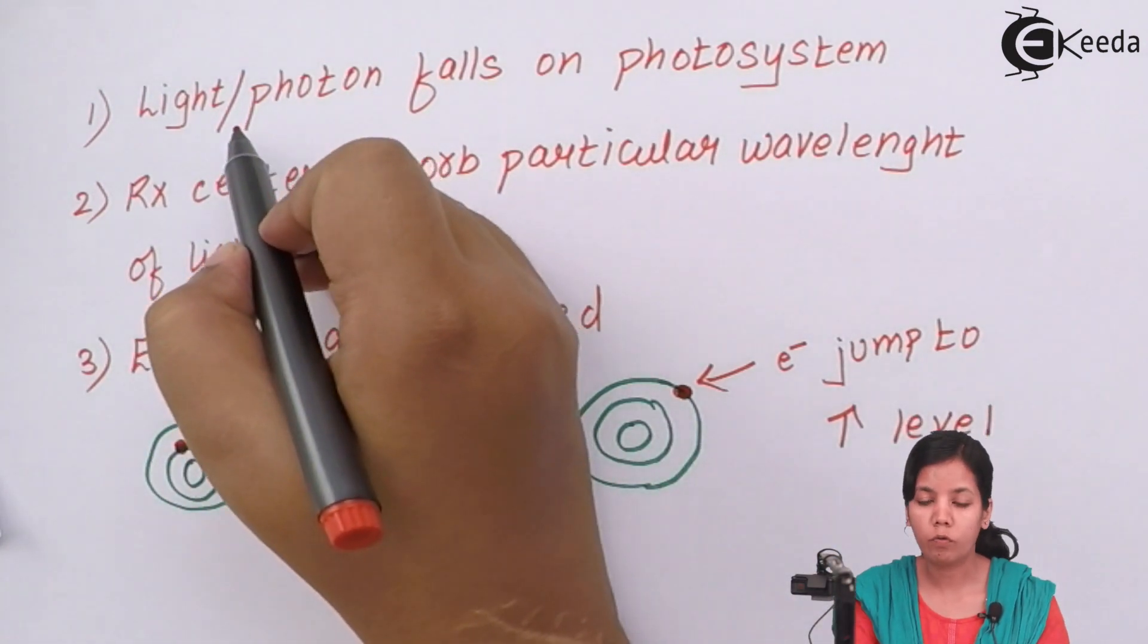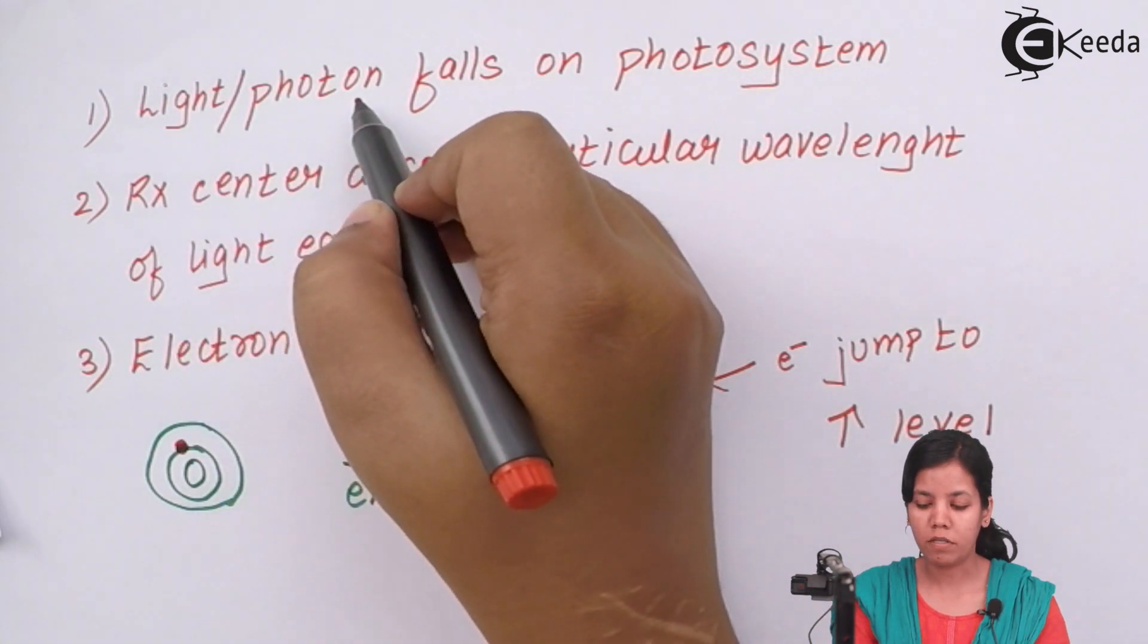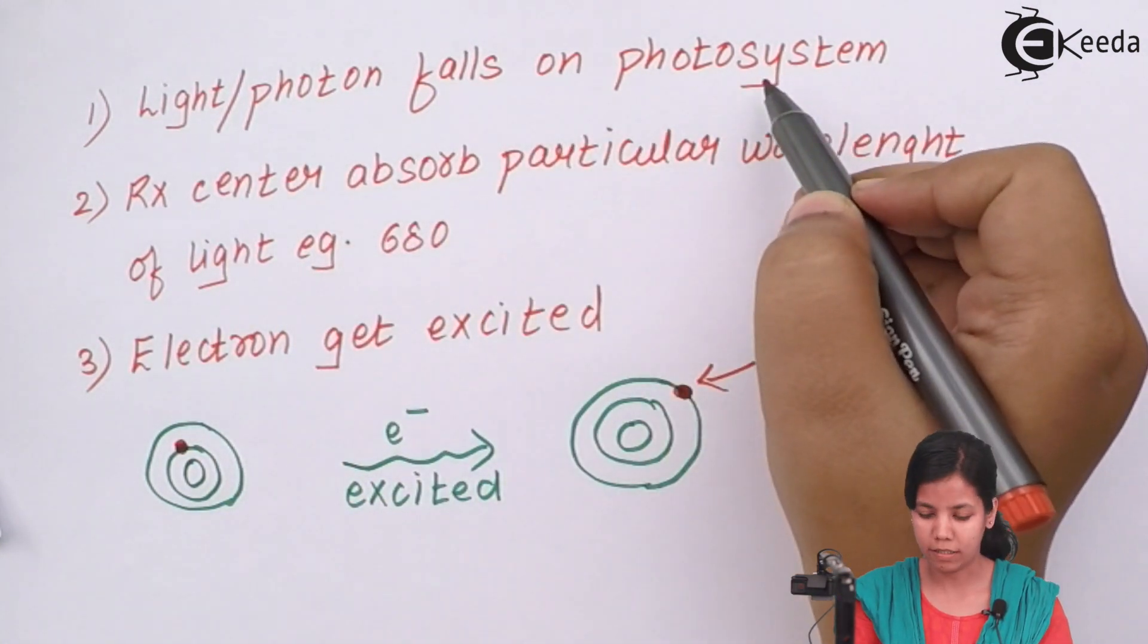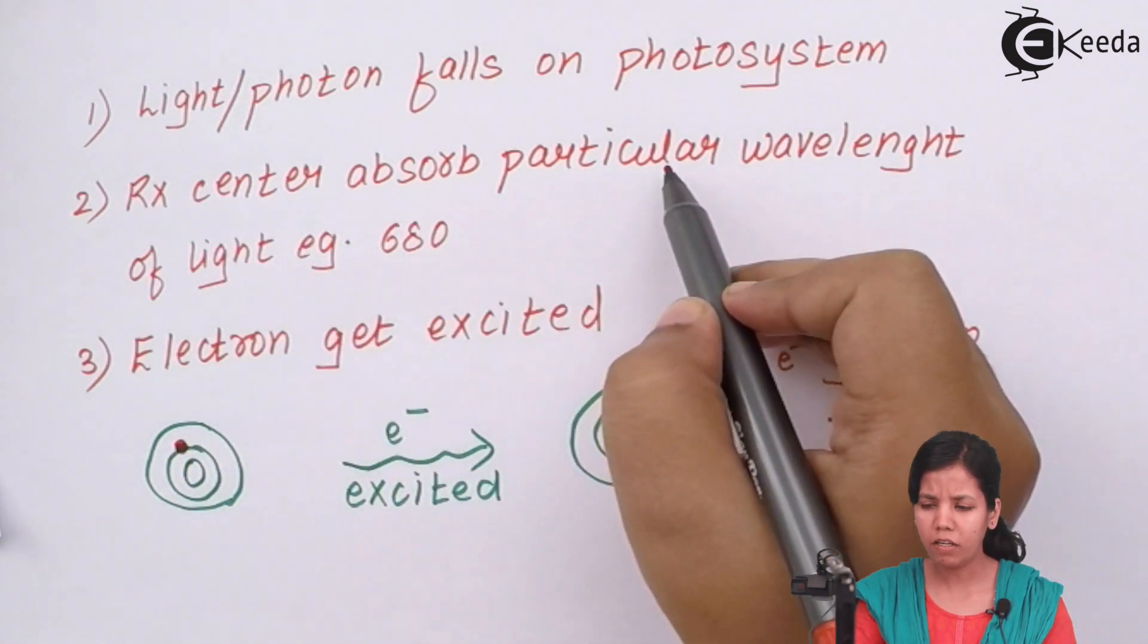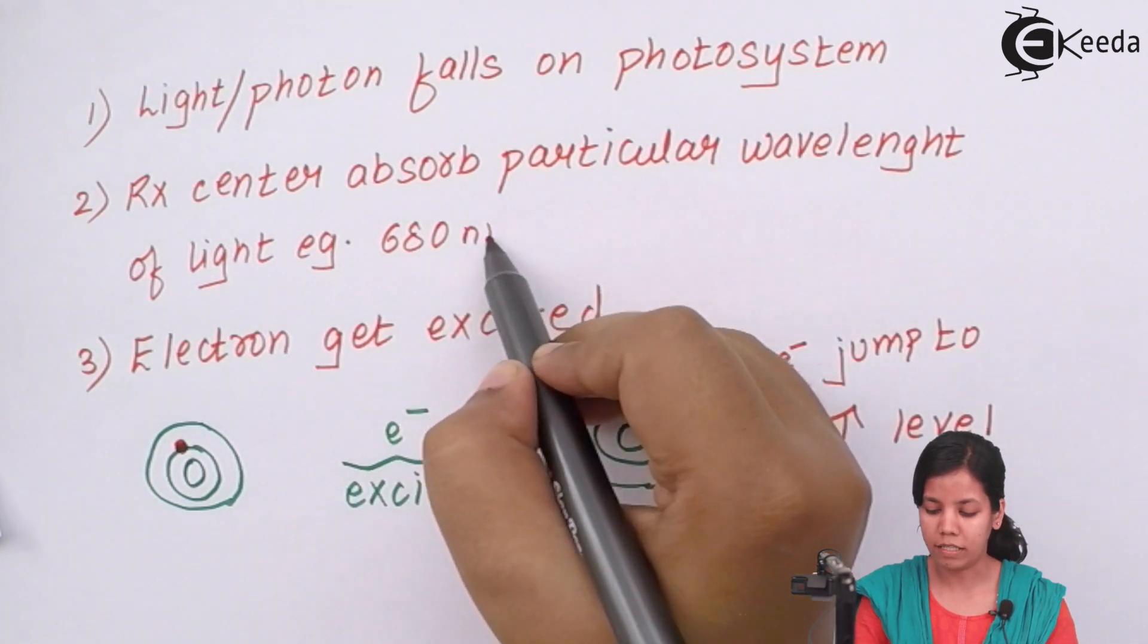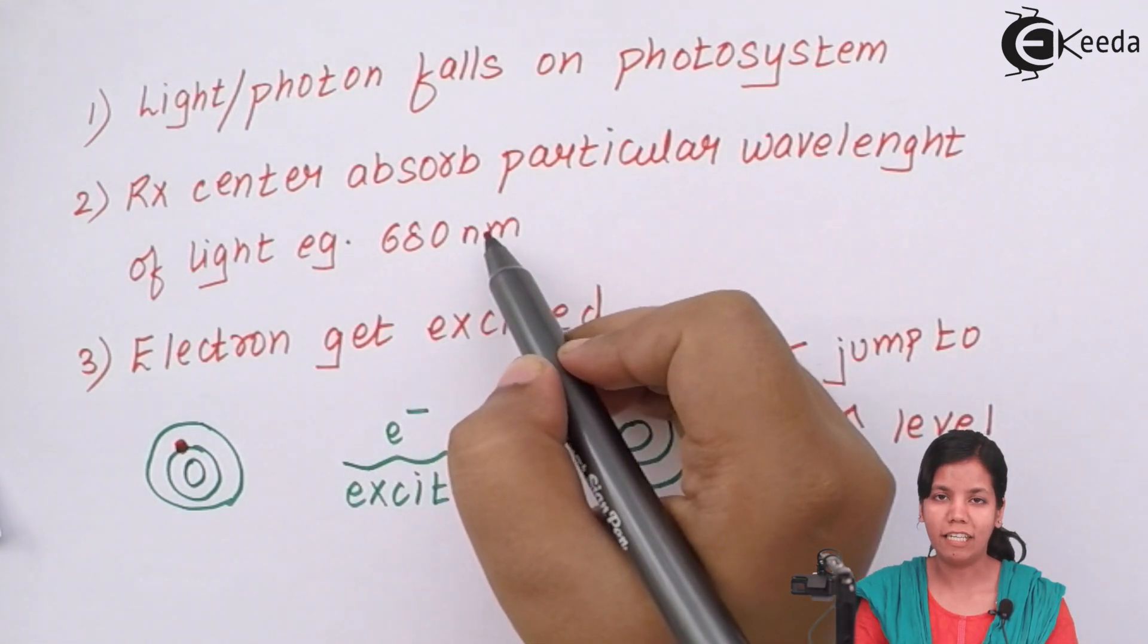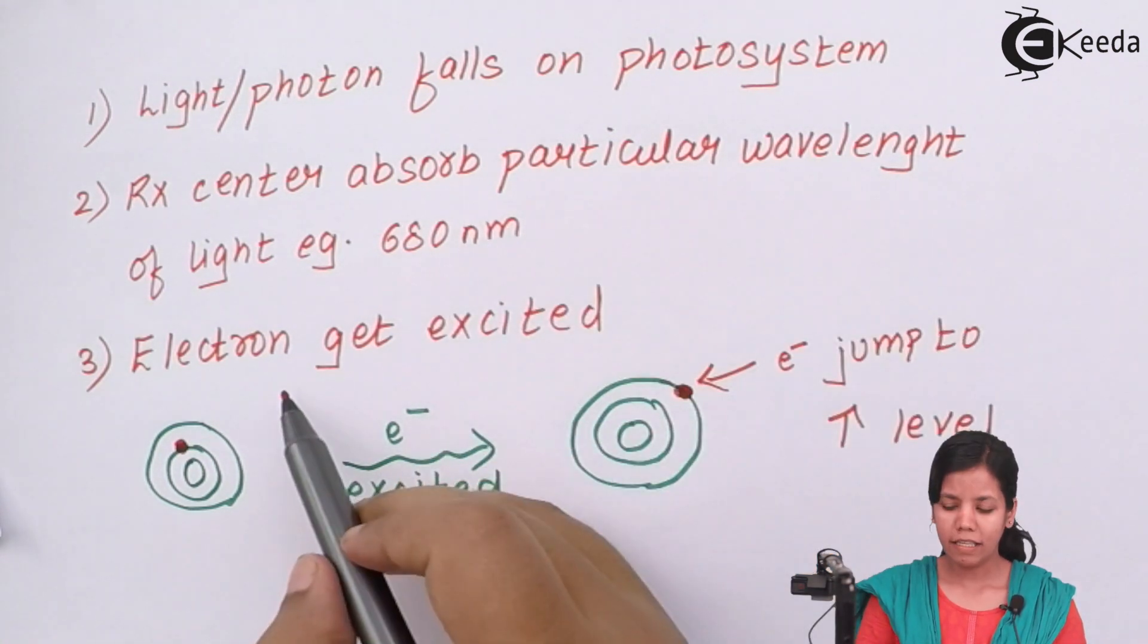The process of photophosphorylation starts when light or photon energy from the sun falls on photosystems. Next, the reaction center absorbs a particular wavelength of sunlight, for example 680 nanometers, if the reaction center has an ability of 680 nanometers. In the third step, electrons get excited.